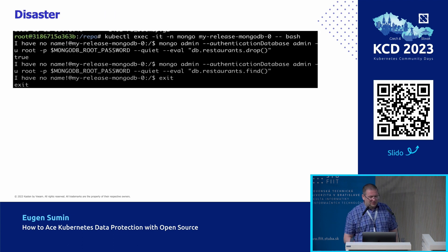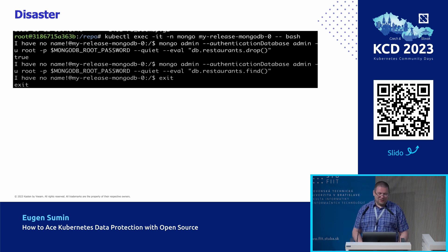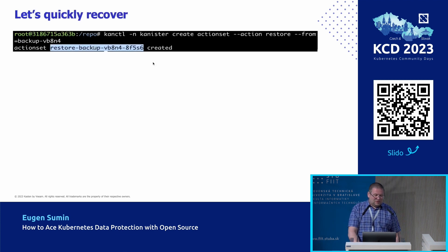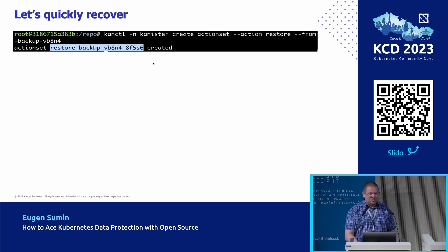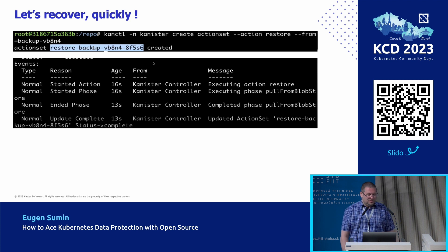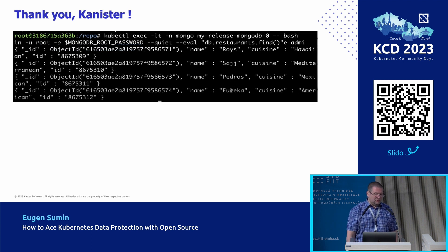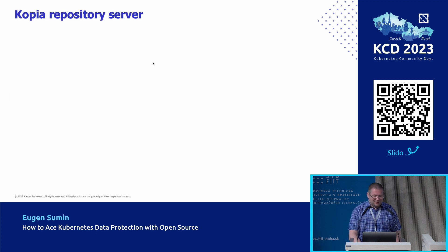We have a backup in the cloud. Let's simulate a disaster by removing everything from the database — nothing is there. To recover, we create another action set with the restore action, referencing the ID from the completed backup action set. We say 'restore from this particular backup.' The restore finishes successfully, and checking the database shows the data is back again.